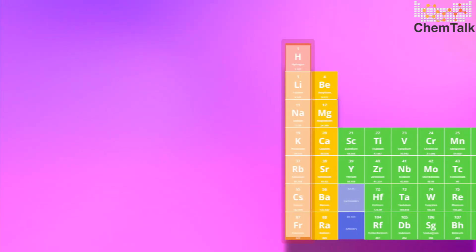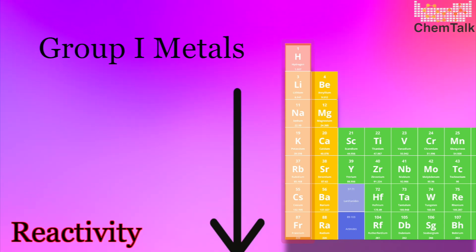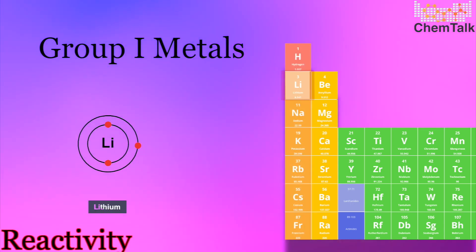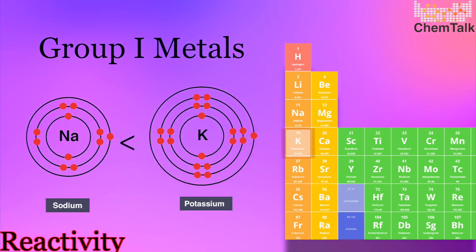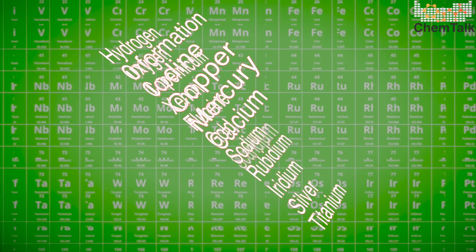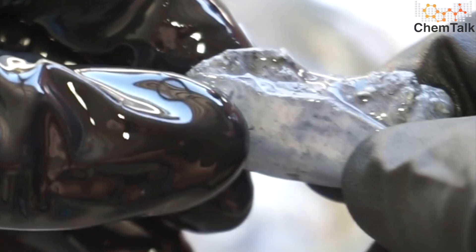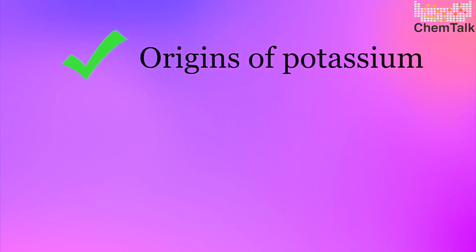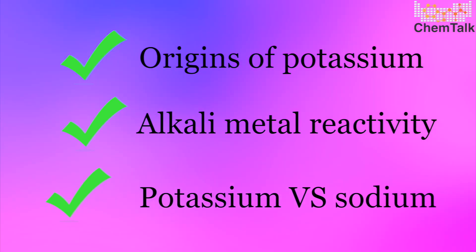In general, Group 1 metals increase in their reactivity as you move down. Lithium is less reactive than sodium, and sodium is less reactive than potassium. Scientific observations such as periodic trends can be helpful in understanding the characteristics of different elements. Now we better understand the origins of potassium, the reactivity of alkali metals, and why potassium reacts more violently than sodium.